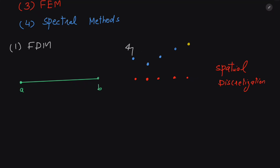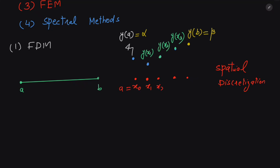At the left endpoint we have y(a) = alpha, and at the right endpoint we have y(b) = beta. All the other values are given at the interior nodes: y(x1), y(x2), y(x3). So x0 = a, then x1, x2, x3, and x4 = b. All the solutions are available on the nodes, and that is why the method is called the finite difference method.